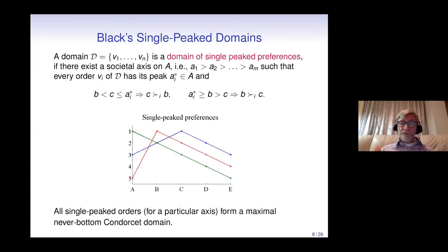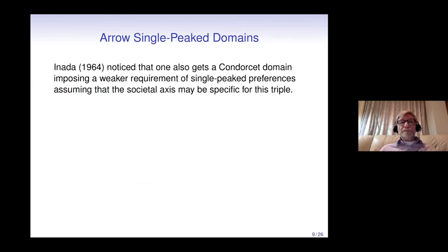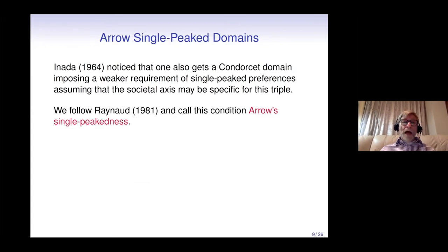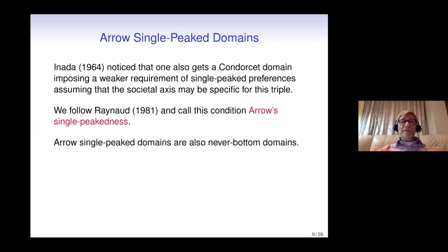Since the conditions are defined on triples, the requirement of single-peakedness can be imposed separately on each triple, and a global societal axis may not exist — it may be specific to each triple. Renault called these conditions Arrow single-peakedness. Arrow single-peak domains are also Condorcet domains and are never-bottom domains.